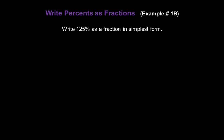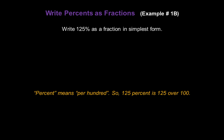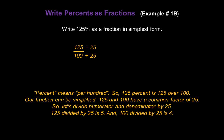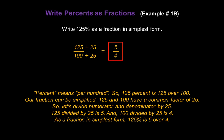Now let's write one hundred twenty-five percent as a fraction in simplest form. Again, percent means per hundred, so one hundred twenty-five percent is one hundred twenty-five over one hundred. This fraction can be simplified too. One hundred twenty-five and one hundred have a common factor of twenty-five. So let's divide the numerator and denominator by twenty-five. In the numerator, one hundred twenty-five divided by twenty-five gives us five. And in the denominator, one hundred divided by twenty-five is four. So as a fraction in simplest form, one hundred twenty-five percent is five over four.